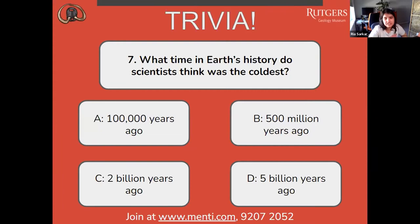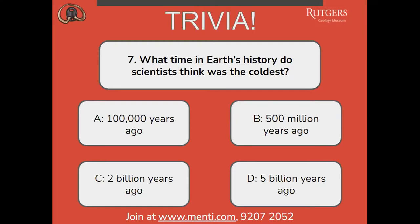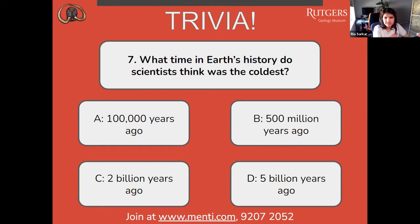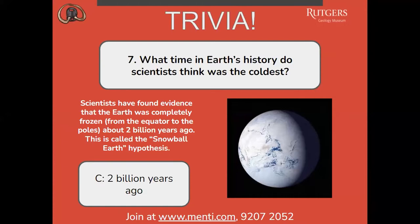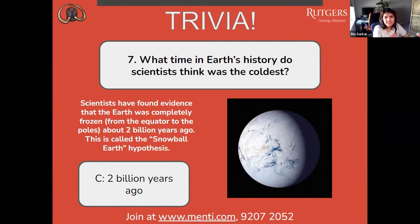Number seven: what time in Earth's history do scientists think was the coldest? A, 100,000 years ago; B, 500 million years ago; C, 2 billion years ago; or D, 5 billion years ago. The answer is C, 2 billion years ago. Scientists have found evidence that the Earth was completely frozen from the equator to the poles about 2 billion years ago, and this is called the Snowball Earth Hypothesis.